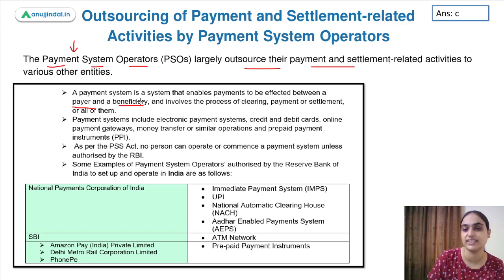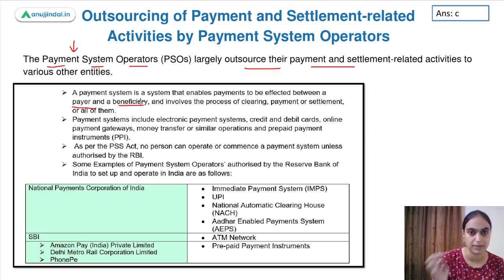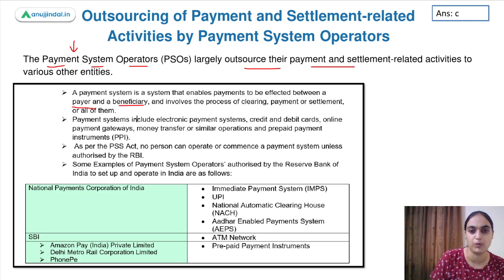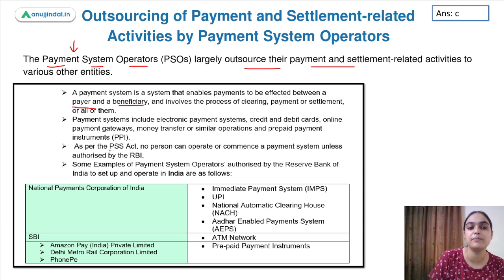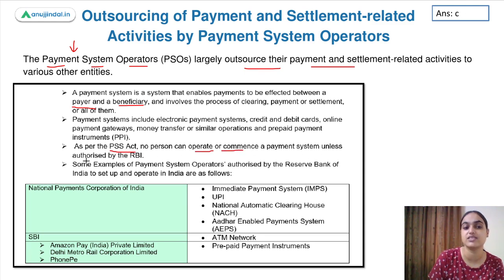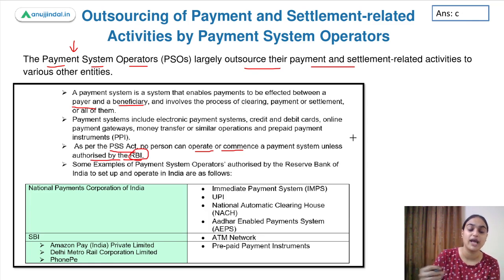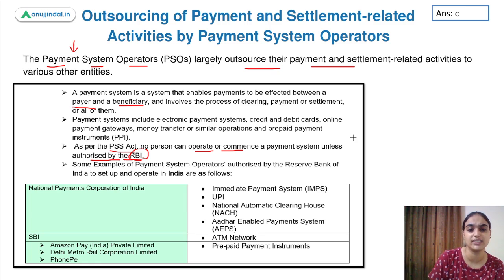These payment systems can outsource their activities to some third party — rather than doing the same thing yourself, you are using a third party to provide services or conduct operations on your behalf. As per the PSS Act — the Payment and Settlement System Act — no person can operate or commence a payment system unless authorized by RBI. Authorized payment systems include electronic payment systems, credit cards, debit cards, payment gateways, PPIs, and examples include NPCI.